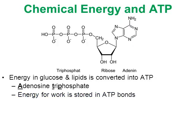Energy for our cells to do work will be stored in the bonds of an ATP molecule. Here's a molecule of ATP, and you can see the three phosphates — remember, it's called triphosphate. You can see the three phosphates on the left of this diagram. That's typically where the energy for cells to do work is stored, in between the bonds holding the phosphates together.